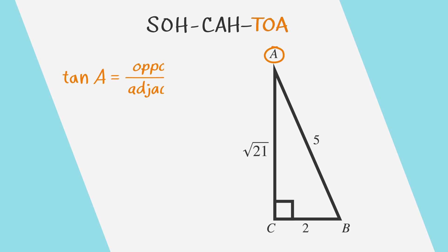The tangent of A equals the side opposite A, which is 2, over the side adjacent to A, the square root of 21. So the tangent of A is 2 over the square root of 21.